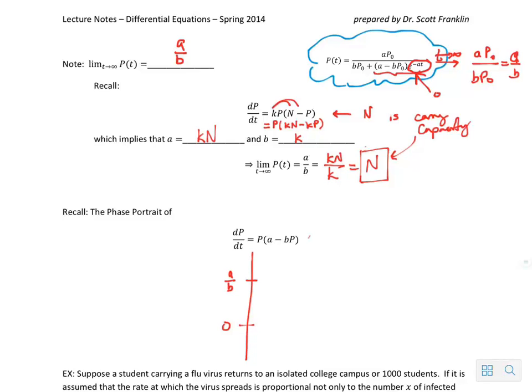We found the critical points for this differential equation were actually 0 and a over b. Above a over b, for any value greater than a over b, which is a positive quantity because a and b are positive, we know that all functions are going downhill.